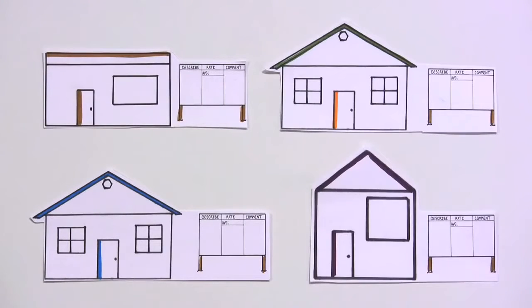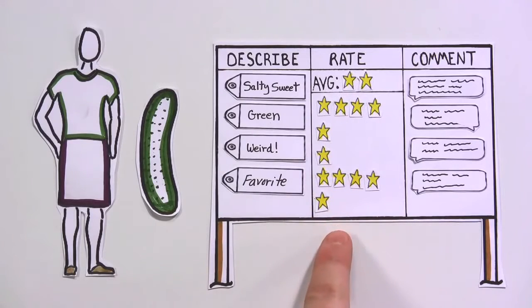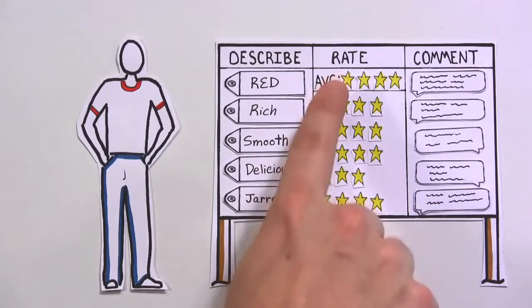Over time, each resident had their own board. Sylvia's board showed that her pickle ice cream didn't please everyone, but was very unique and interesting. Jarrett's board overflowed with positive reviews and ratings.